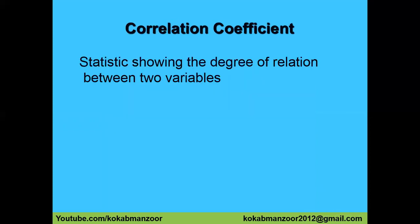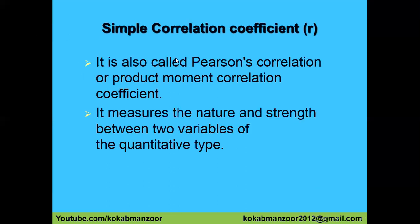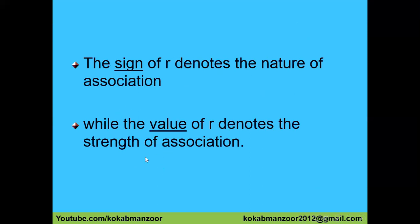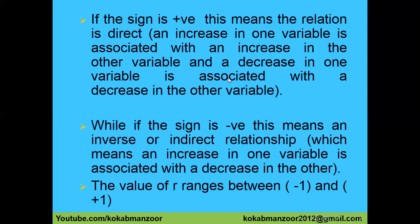Now the next concept is the correlation coefficient. So far we know that by plotting data we can tell whether a relationship is positive or negative. But we also want to know: is it a strong or weak relationship? For this purpose we use the correlation coefficient, denoted by a small r. It is also known as Pearson correlation or product-moment correlation. When there is a positive sign, it's a positive relationship; when there is a negative sign, it's a negative relationship. The value of r is always between minus 1 and plus 1.